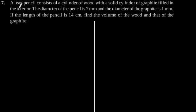Exercise 13.6 Question number 7. A lead pencil consists of a cylinder of wood with a solid cylinder of graphite filled in the interior. The diameter of the pencil is 7 mm and the diameter of the graphite is 1 mm. If the length of the pencil is 14 cm, find the volume of the wood and that of graphite.